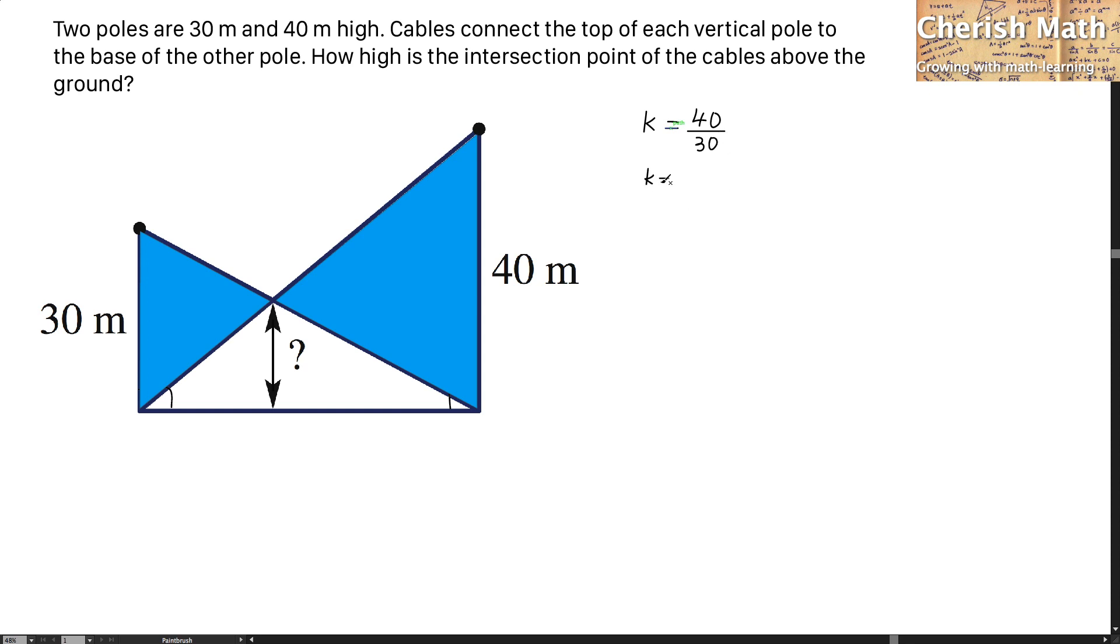And I got the scale factor as 4 divided by 3. Let's make two more triangles that I'm going to label with red color.